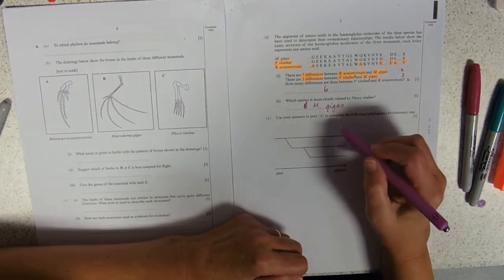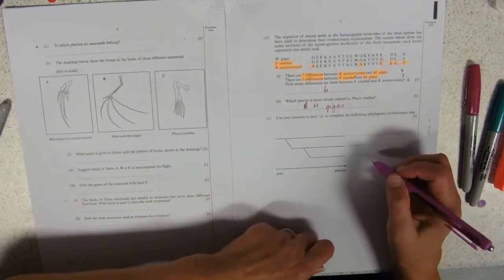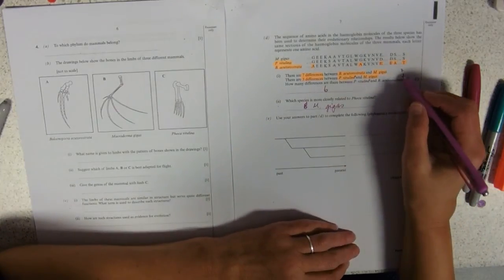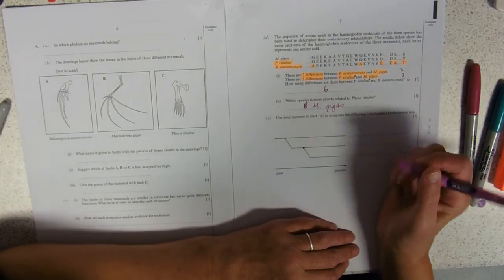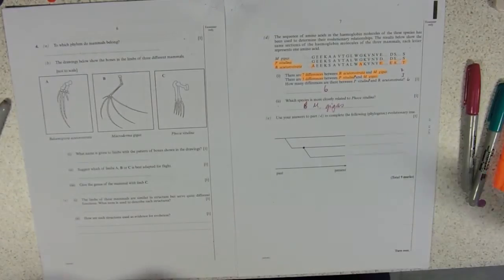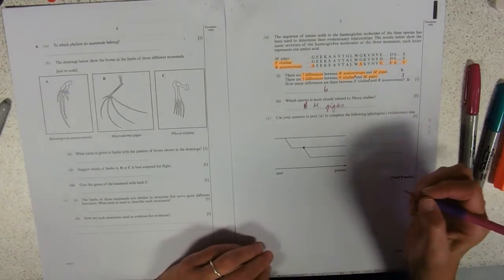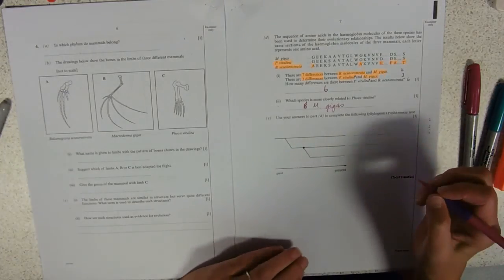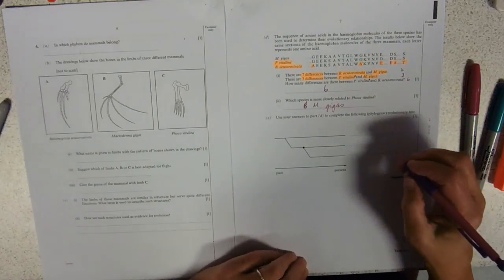Use your answers to part D to complete the following phylogenetic evolutionary tree. So, three differences, more recent, common ancestry. So, here, I'm just going to use a pencil for this, if I can find one. I read a pencil a minute ago, don't know what I've done with it. Anyway, thank you to Dr. Garvey, the very organised Miss Pencil case.